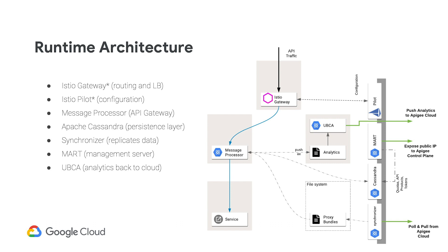The overall architecture follows a fail-open philosophy. All critical pieces needed for the success of your API call are available at the infrastructure you manage. Should you lose connectivity to the cloud — mart and synchronizer are the two components that tether to the cloud — all the information the gateway needs to continue processing APIs is already available locally. You won't be able to deploy a new proxy or create a new cache or KVM during an outage, but any information that already made it through before the failure is present. A constant tether to the cloud is not necessary for processing APIs.